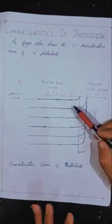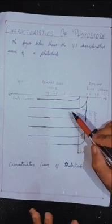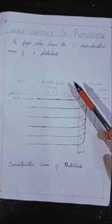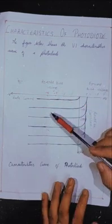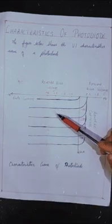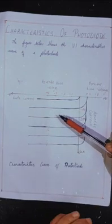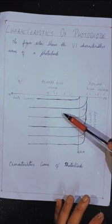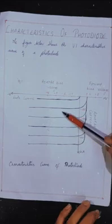When the junction is exposed to radiation, the current will now start increasing and become totally independent of the reverse voltage. Once the junction is illuminated, the carriers will flow only due to the intensity of light and the increase in temperature, and the reverse bias voltage will not play any role in this condition.